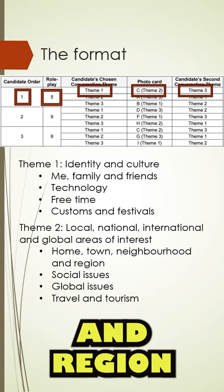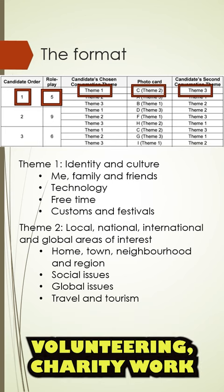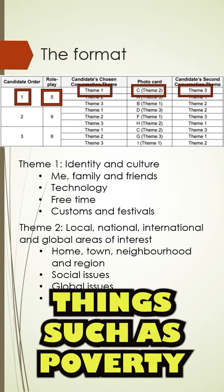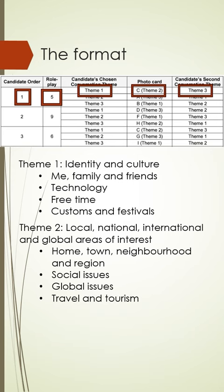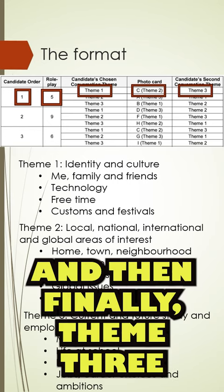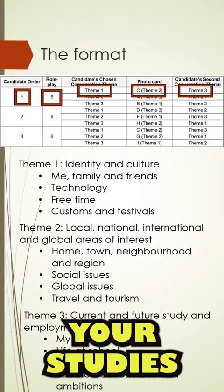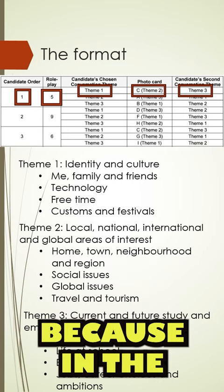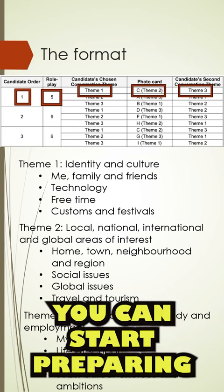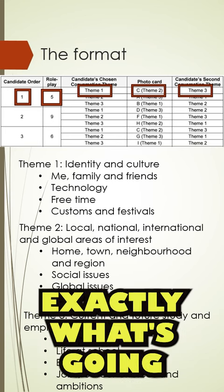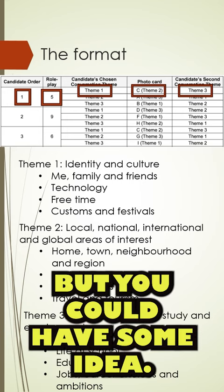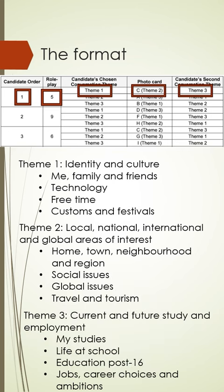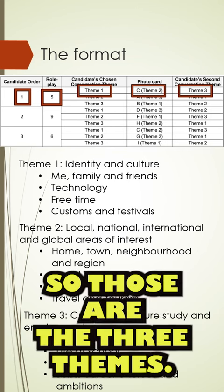Under theme two: hometown, neighbourhood, region, social issues — which includes things like volunteering and charity work — and global issues such as poverty, homelessness, and the environment. Social issues could also include healthy living. And then finally, theme three is mostly about school, your studies, and your future career. It might be an idea when you're choosing your theme to choose the theme that you find the most difficult, because in the lead up to the exam you can start preparing your answers to possible questions. You won't know exactly what's going to be asked, but you could have some idea.